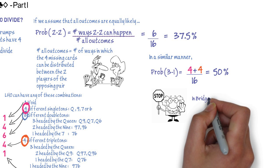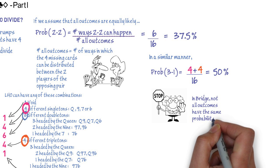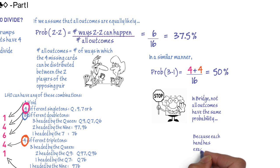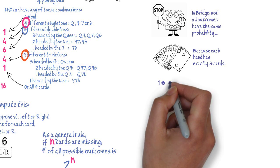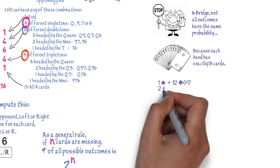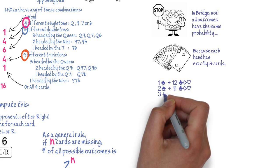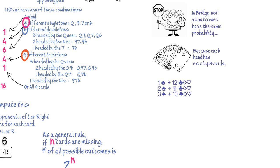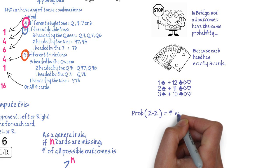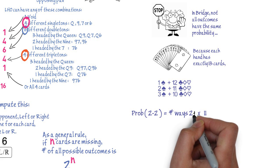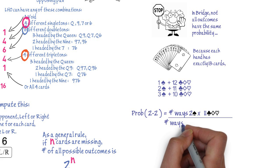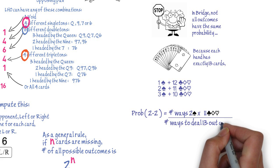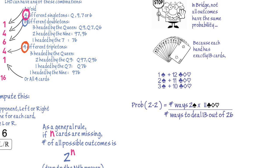But wait. In Bridge, not all outcomes have the same probability. Because each hand has exactly 13 cards, an opponent can have 1 trump only if he has exactly 12 cards in the other suits; 2 trumps if he has 11; 3 trumps if he has 10; and so on.